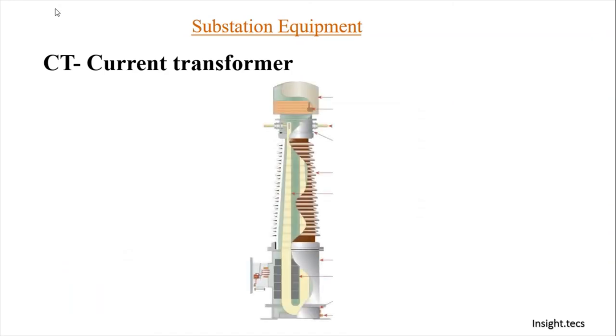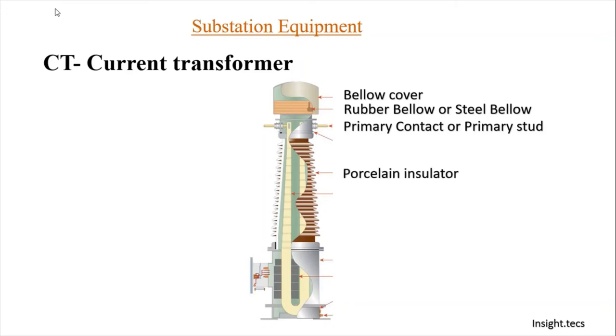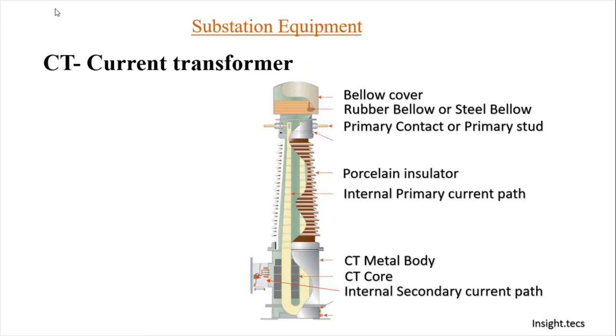The construction of CT. We will consider a dead tank oil filled CT because that is widely used in substations these days. The first component is a bellow cover. Below that is a rubber bellow or steel bellow. This is the indication of some kind of dissolved gases present inside the CT, because whenever there is any fault and the arc is quenched inside within the oil, then the rubber bellow gives the indication that there might be some dissolved gases present inside the CT. Next is a primary contact or primary stud, then a porcelain insulator, internal primary path that can be called as the primary winding, then there is a CT outside metal body, then there is a CT core and internal secondary current path or secondary winding, then there is a tan delta point using which we can conduct a tan delta test on the CT.